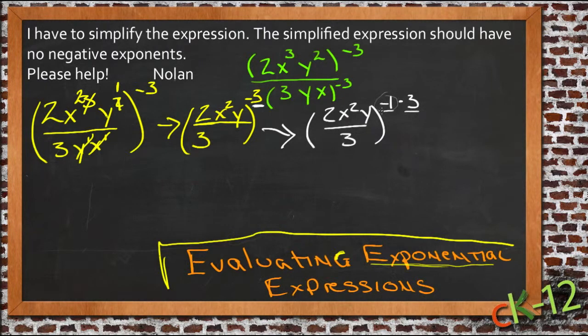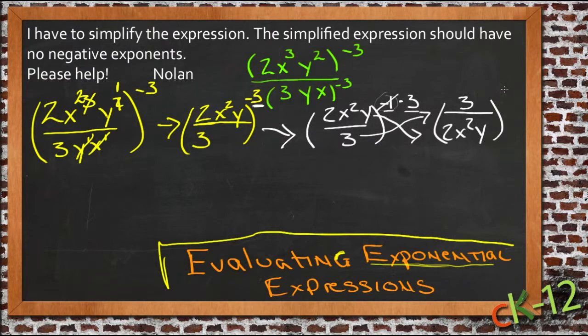To raise it to this power, we're just going to flip it over. So we'll get rid of that negative 1 power, and we'll take the whole fraction and write it upside down. So we'll have 3 over 2x squared y, and now we have that whole thing to the power of 3. But we've gotten rid of that negative 1 by inverting the fraction.